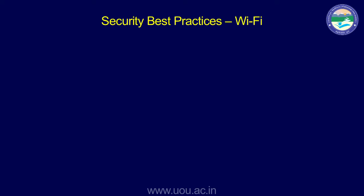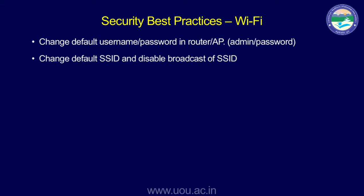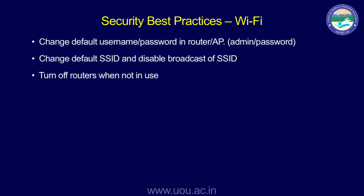Security best practices for Wi-Fi: First, change the default username and password on your router or access point — use a strong credential and not vendor-supplied defaults like admin/admin or test/test. Change the default SSID and disable the broadcast of the SSID so attackers cannot identify which vendor, version, or firmware your router is using, making it more difficult to compromise. Turn off the router when not in use.